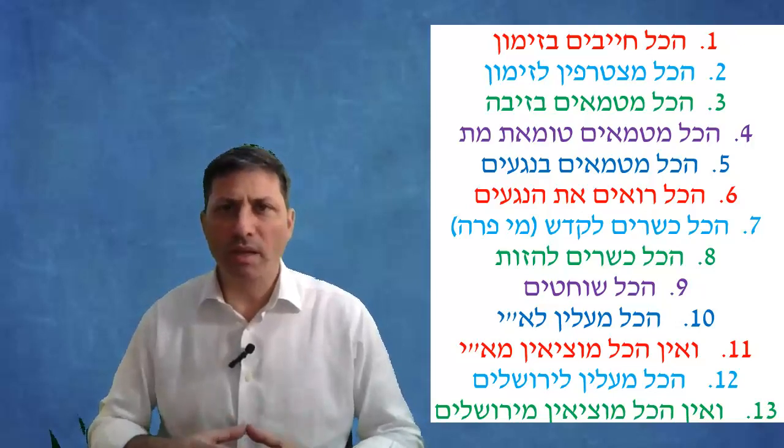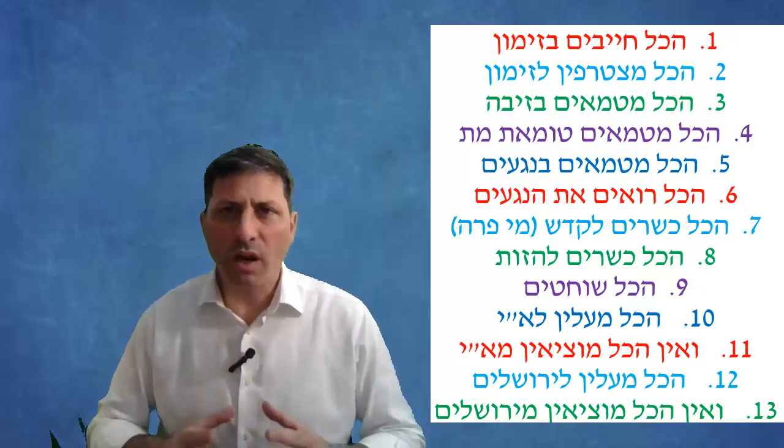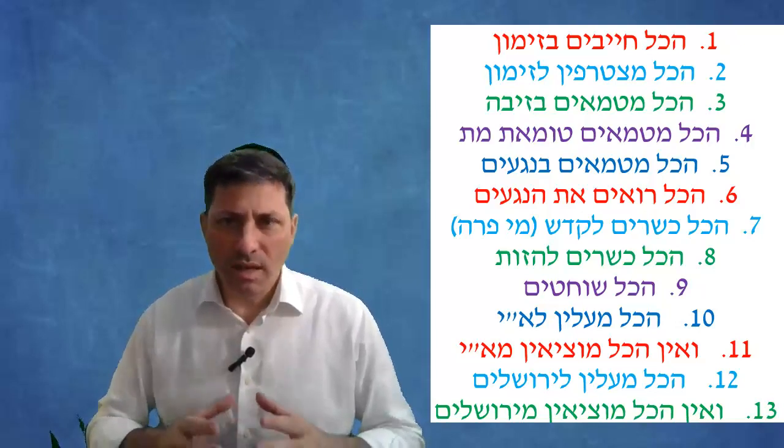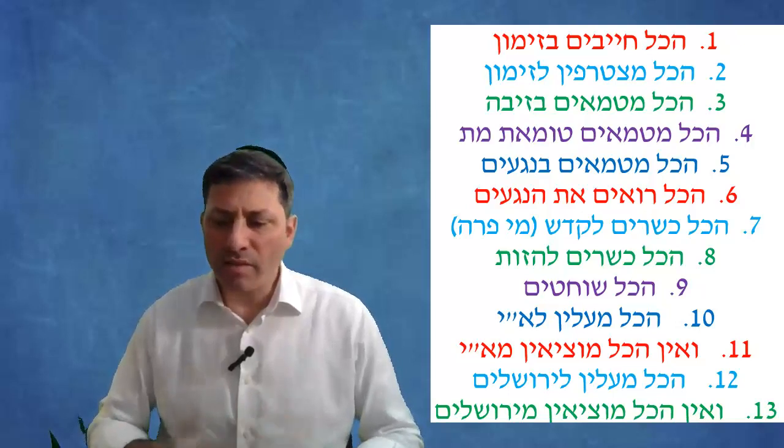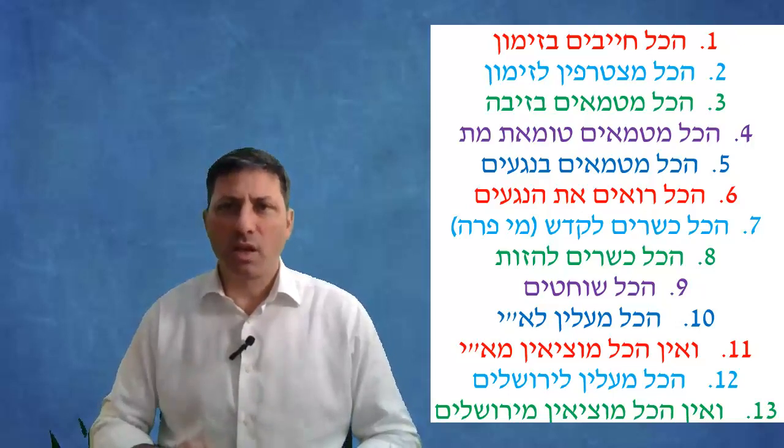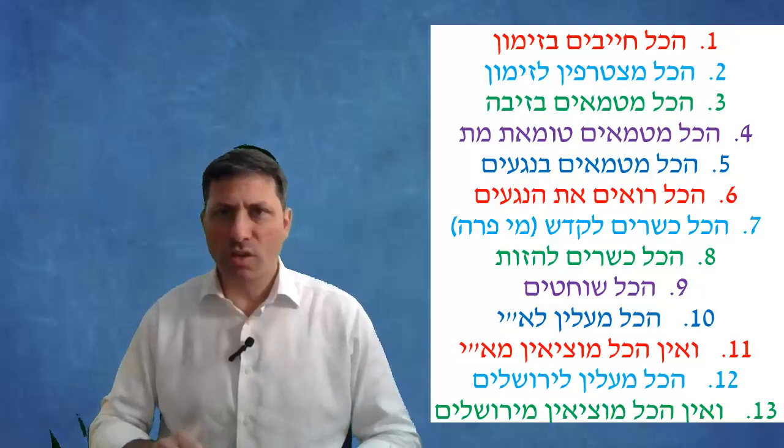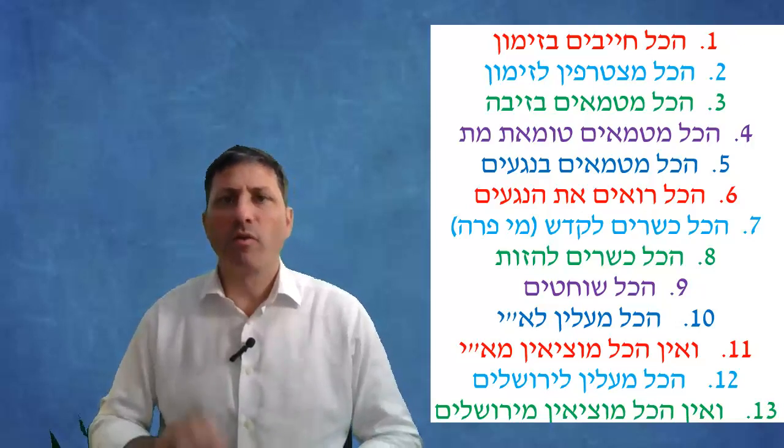It says hakol mitamei tumas meis - everybody becomes tamei to a meis, to a corpse. It comes to include even a katan, a minor, because it says nefesh. As long as he's alive he's tamei. The fact that it says ish, which I would think means an adult - no, it just means that a katan does not get kares for going into the Beis HaMikdash b'tumah.